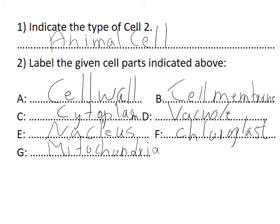Cell wall — it keeps the cell stiff and gives strength to the cell. Cell membrane — it allows the exchange of materials. C is the cytoplasm, inside the cell. D is the vacuole, which is the storage of water in the cell. The nucleus is the mastermind, the king of the cell, which controls all the cell activities.